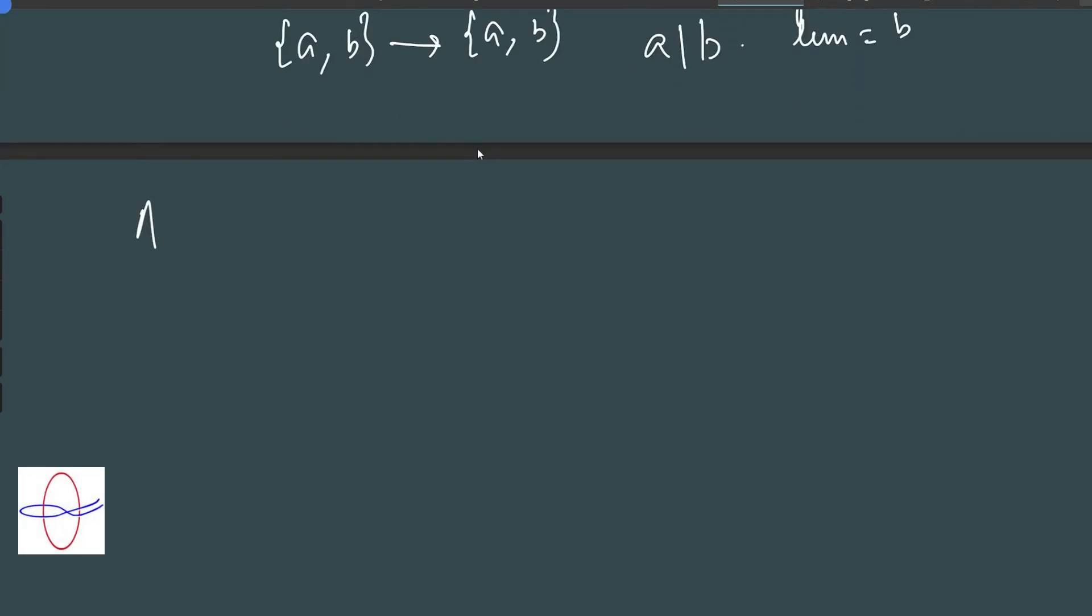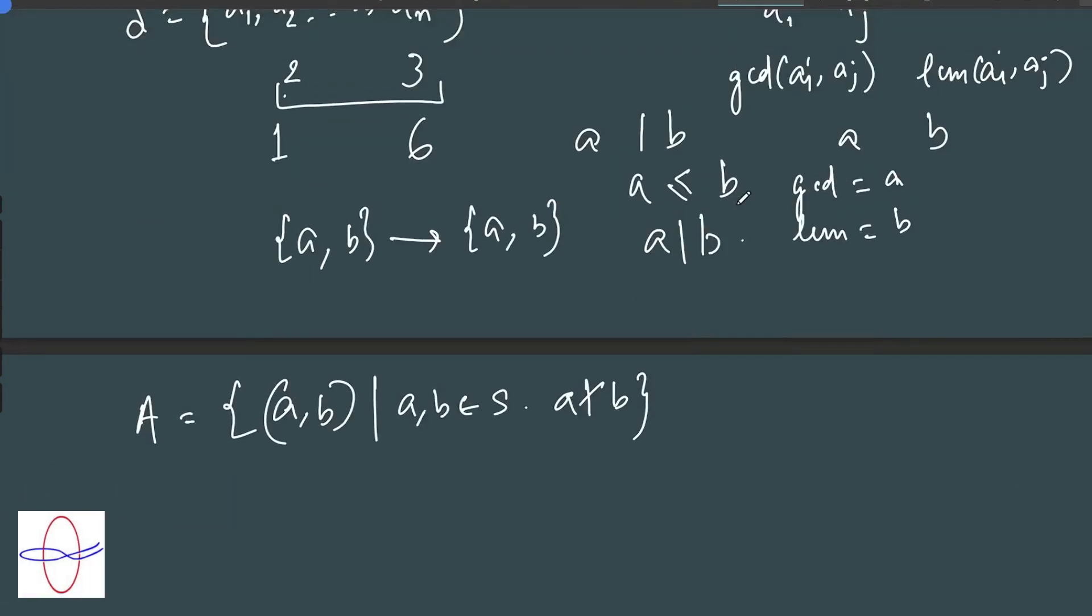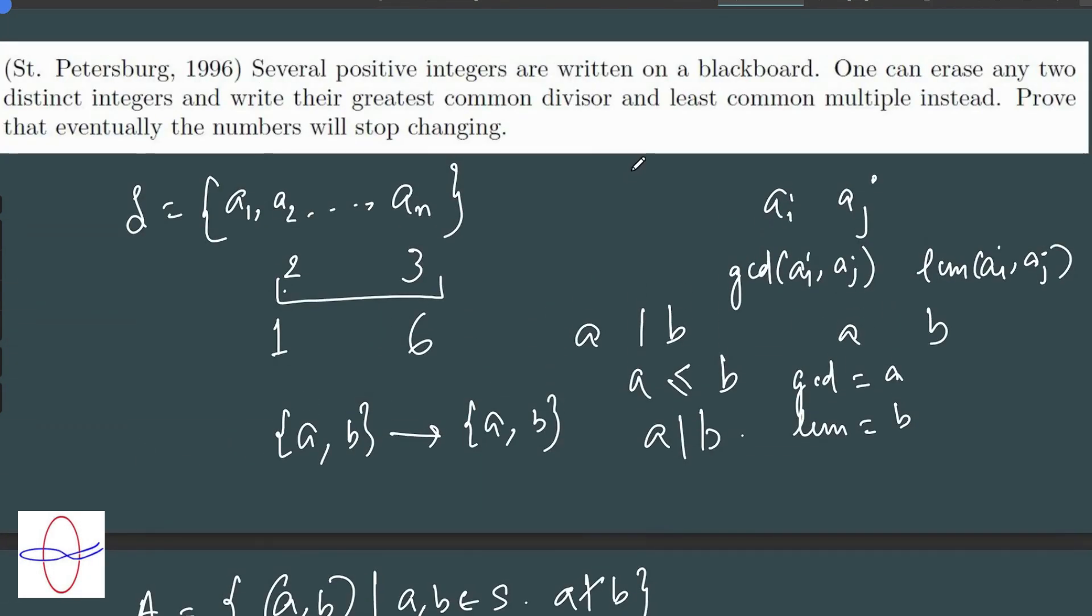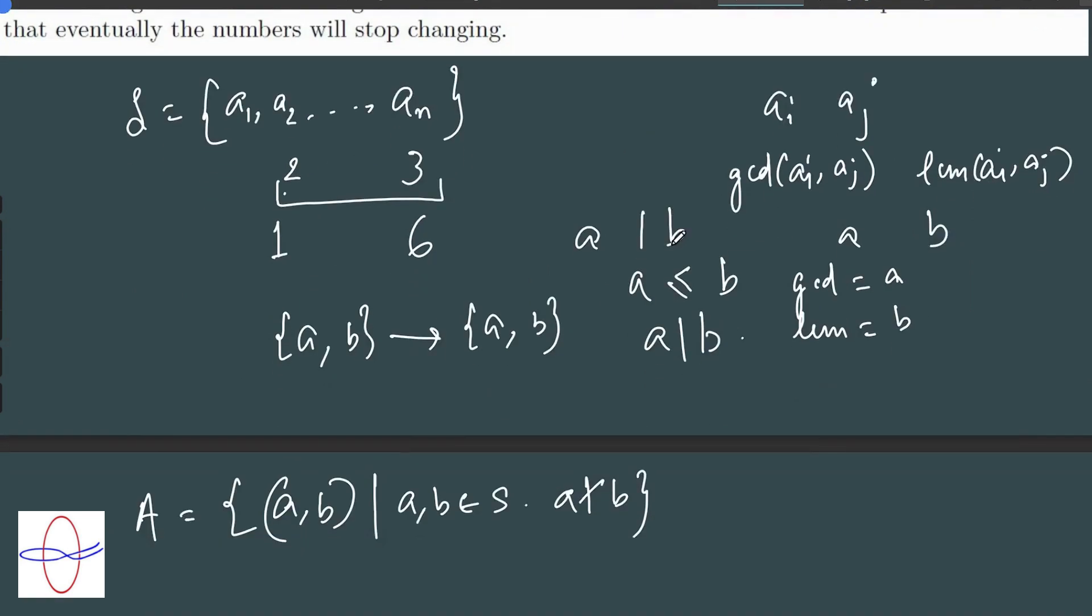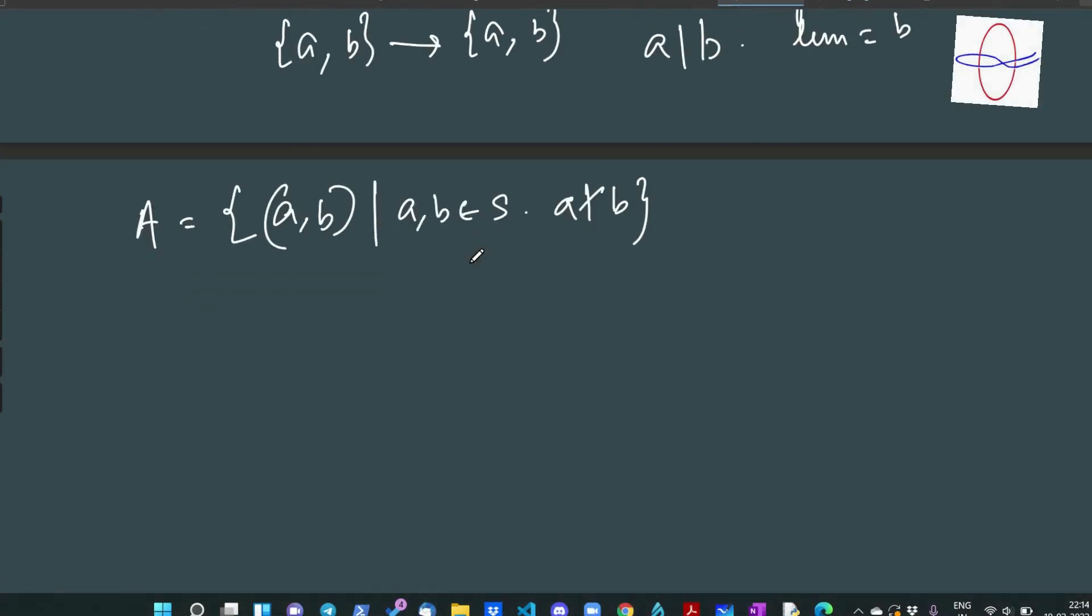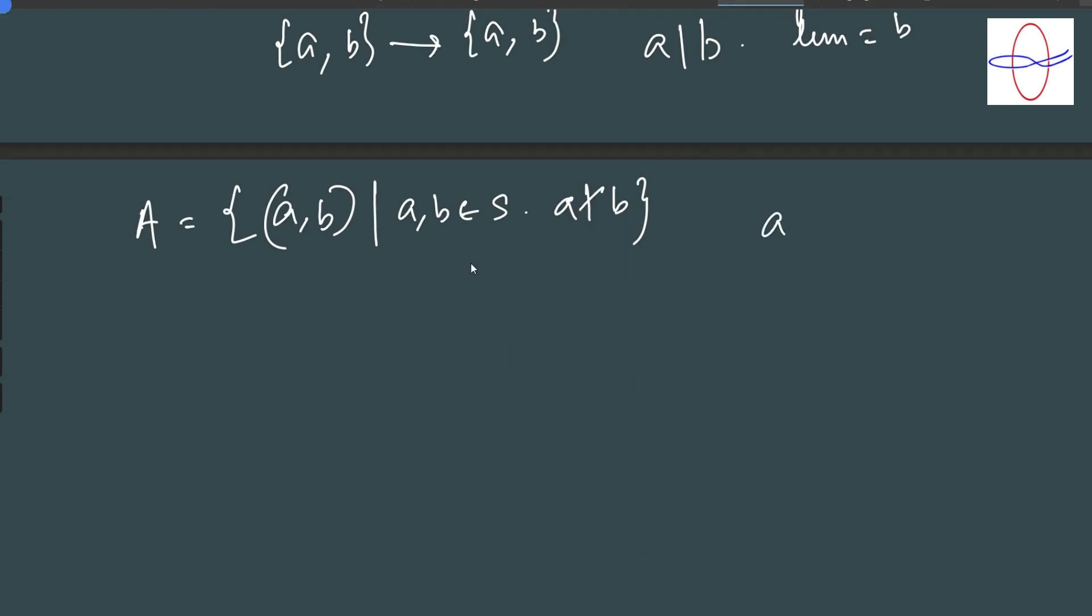Let's say I define a set A equals all pairs, the set of pairs (a,b) element of S such that a does not divide b. Now why does it make sense to do this? And also, a slight cutaway. Say you start with A1, A2, you turn it into the, you take these two, replace them by the GCD.